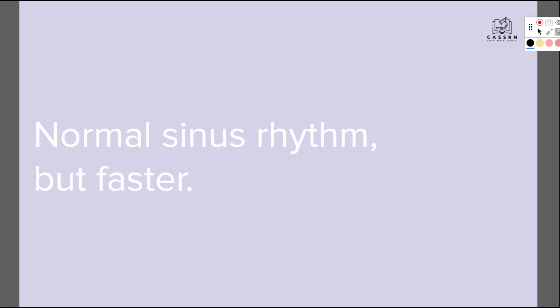Sinus tachycardia is just like normal sinus rhythm in that the EKG — the PQRST — is going to look normal, but it's going to be more frequent and faster. A normal sinus rhythm is between 60 and 100 beats per minute. In sinus tachycardia, your beats are going to be greater than 100 beats per minute.